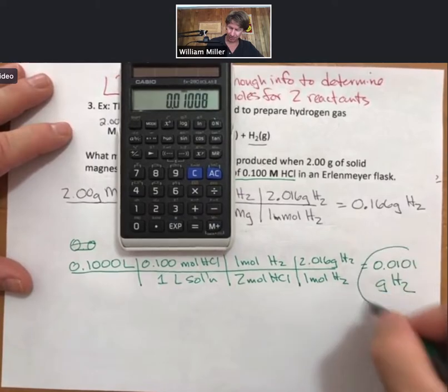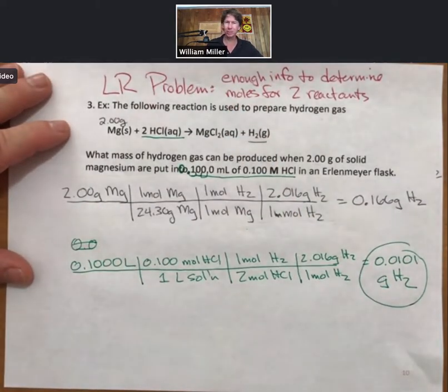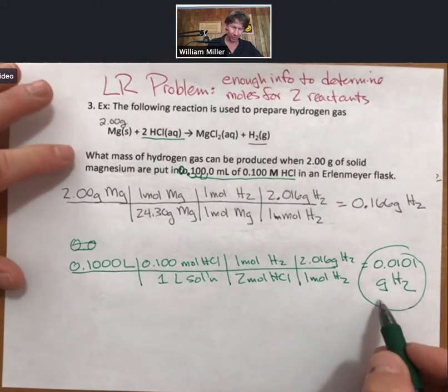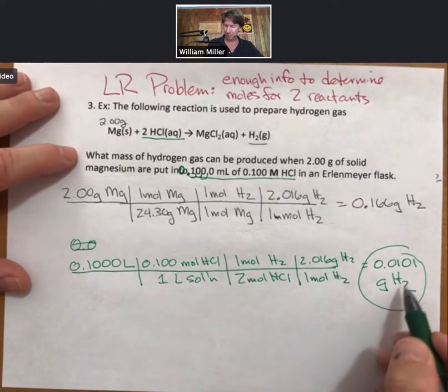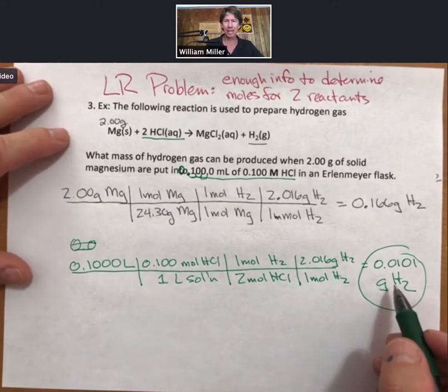That is much smaller. It is always, in limiting reactant problems, the smaller amount that you can make. And so what mass of hydrogen can be produced? This mass here. We also know that HCl, hydrochloric acid, is our limiting reactant as well.